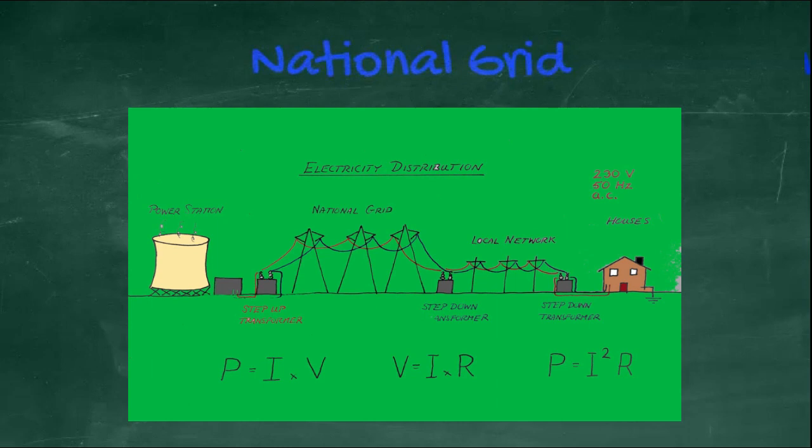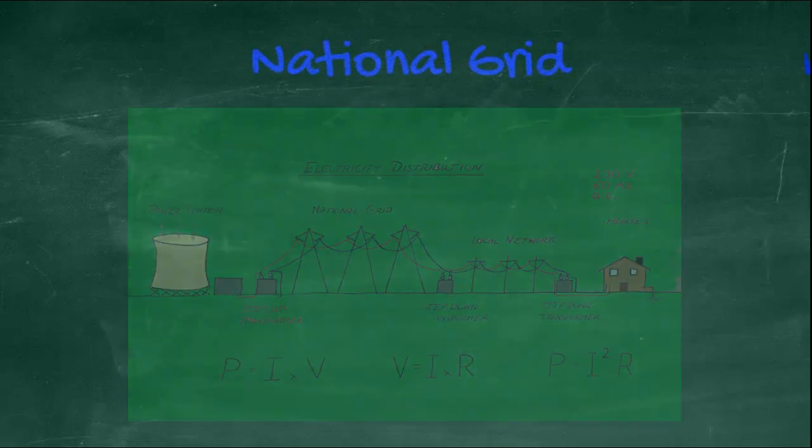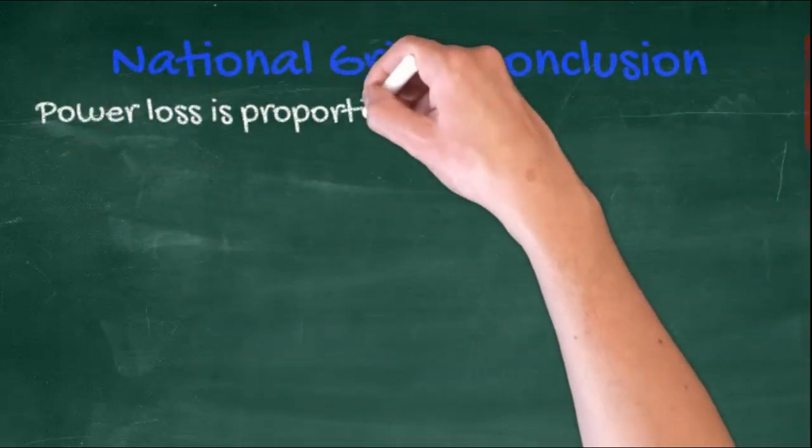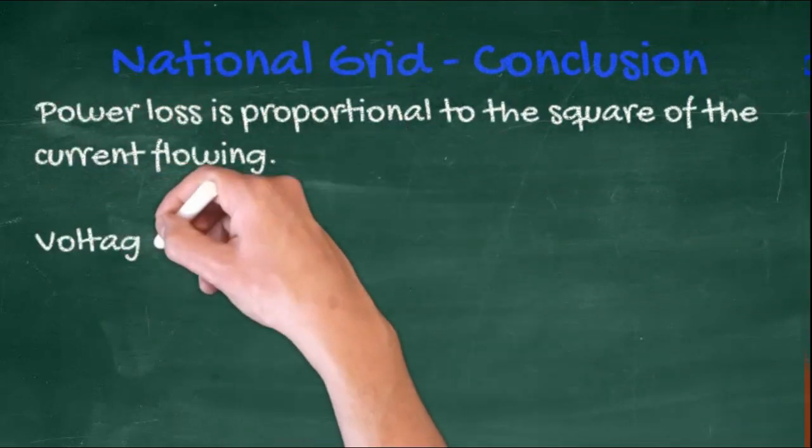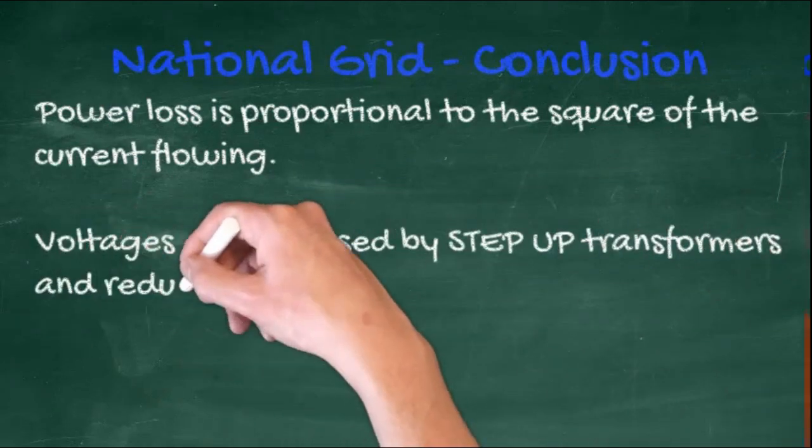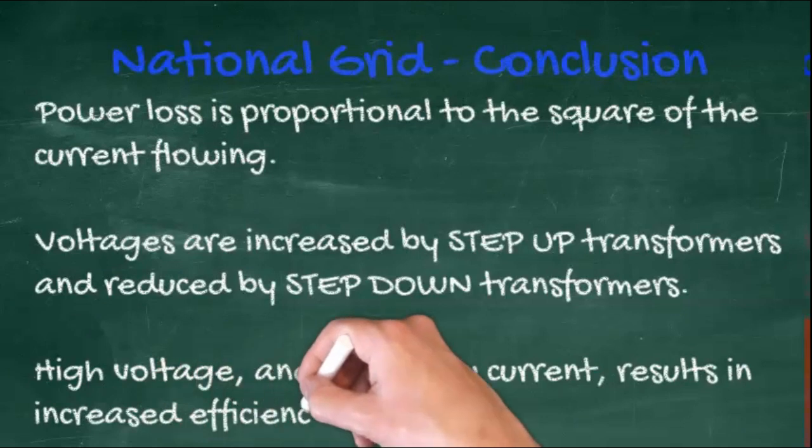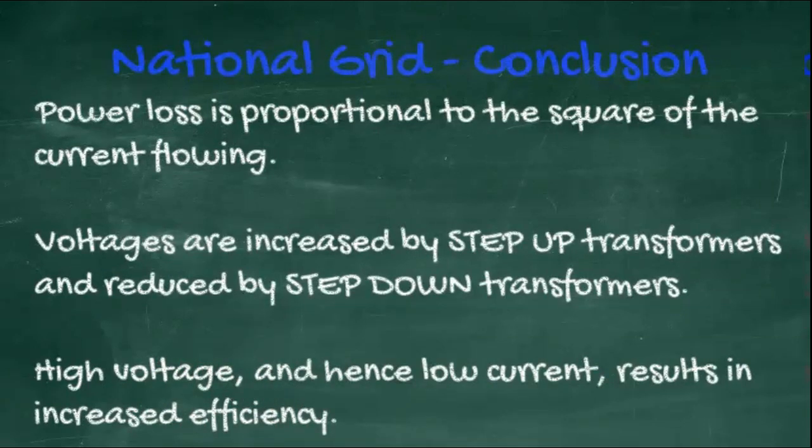A quick picture showing how step-up and step-down transformers are used. In conclusion, power loss is proportional to the square of the current flowing. Voltages are increased by step-up transformers and reduced by step-down transformers. High voltages, and hence low currents, result in increased efficiency.